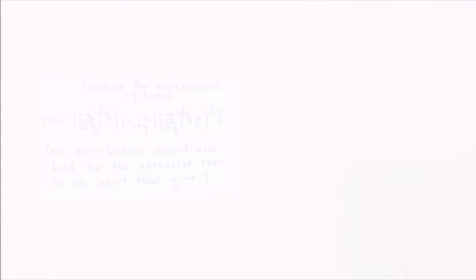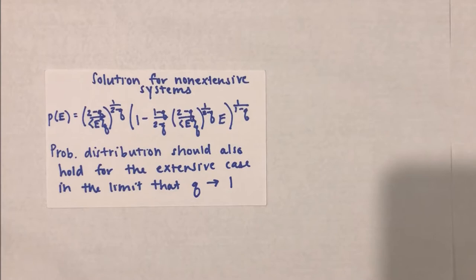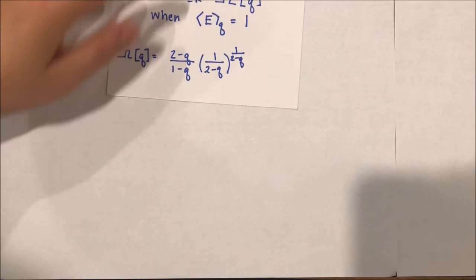Just like the Tsallis entropy, we want to make sure that this solution holds in the limit Q approaches 1. The simplest way to demonstrate this is to consider the value omega, which is found to be this expression.